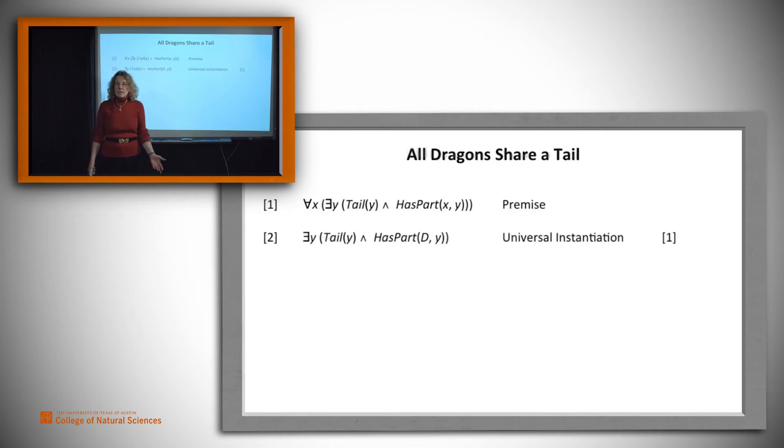We can use universal instantiation to say, well, if this is true of all dragons, then it has to be true of any dragon, and in particular, how about making it true of some representative dragon we'll call D. So there you go.